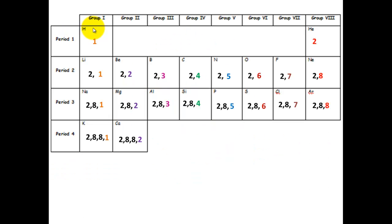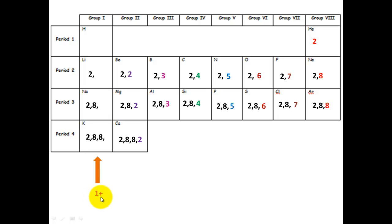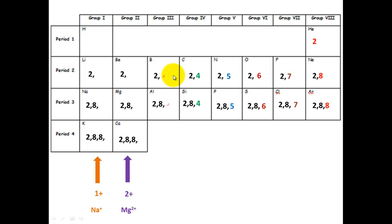Let's have a look at the trends on the periodic table. In group 1, all atoms have 1 electron in their outer shell; in group 2, they've got 2 in their outer shell, and so on. Group 1 atoms will all lose that 1 electron to become a +1 charged ion — for example, Na⁺. Group 2 will lose 2 electrons to become a 2+ ion — for example, Mg²⁺. Group 3 will lose 3 electrons to become a 3+ ion — for example, Al³⁺.